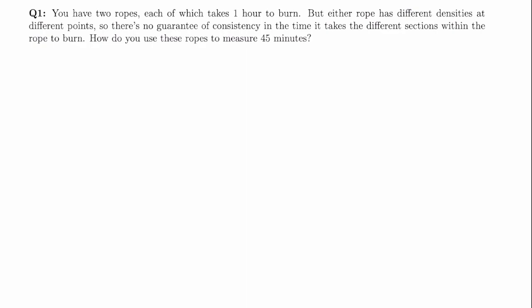So for the first question, we have two ropes, each of which takes one hour to burn. But either rope has different densities at different points, so there's no guarantee of consistency in the time it takes the different sections within the rope to burn. So how do you use these two ropes to measure 45 minutes?